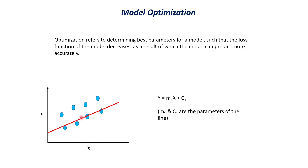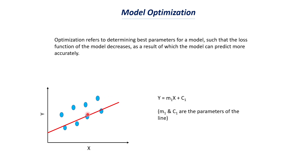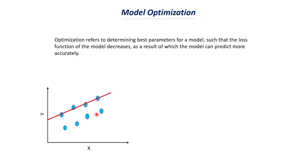We have eight data points. For this particular red line, four data points are closer to it but four are far away. The distance between all data points and this line gives the loss function value. Now let's fit to a different line: this second line is closer to four other data points but far from the rest, with equation y = m2*x + c2. The slope and intercept values for this second line differ from the first line.